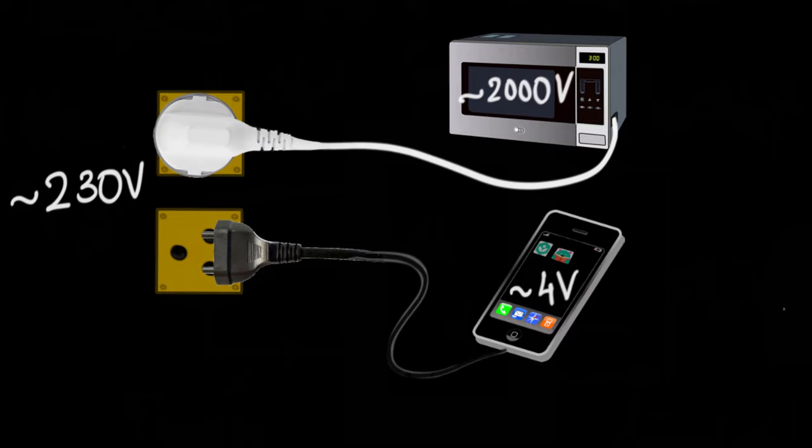How do you run a microwave oven that requires thousands of volts and a phone which requires very tiny amount of voltage by plugging them both into the same supply, 230 volts main supply?